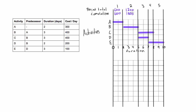In period three, activities C and D are both happening. C costs $400 per day and D costs $200 per day, so during this period we're spending a total of $600 per day. There are two days in period three, adding a period total of $1,200. Adding that to the cumulative gives us a cumulative project cost of $3,000 by the end of period three.